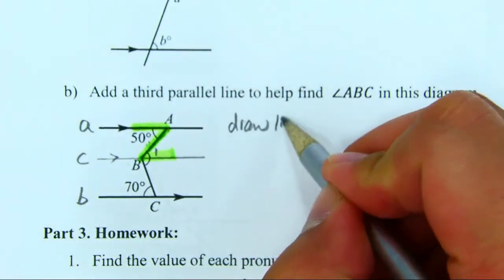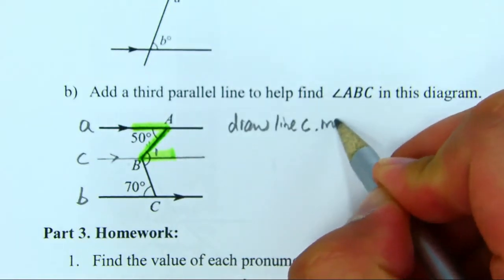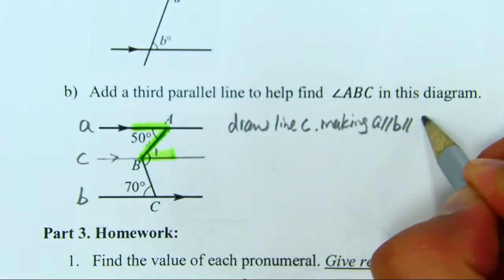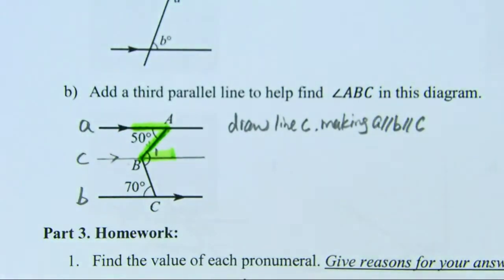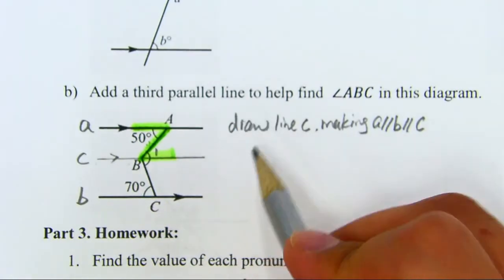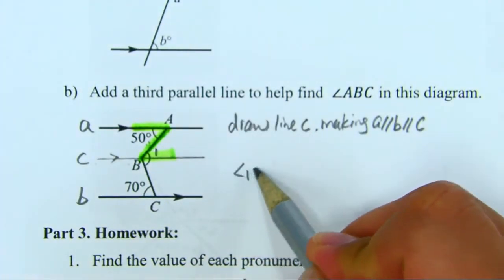Draw line C, making A is parallel to B is parallel to C. This is what we did, we just wrote what we have done. Because C was not given, you have to write how you got C. After you draw the line, I am making A is parallel to C, so we have angle 1 equals 50 degrees.